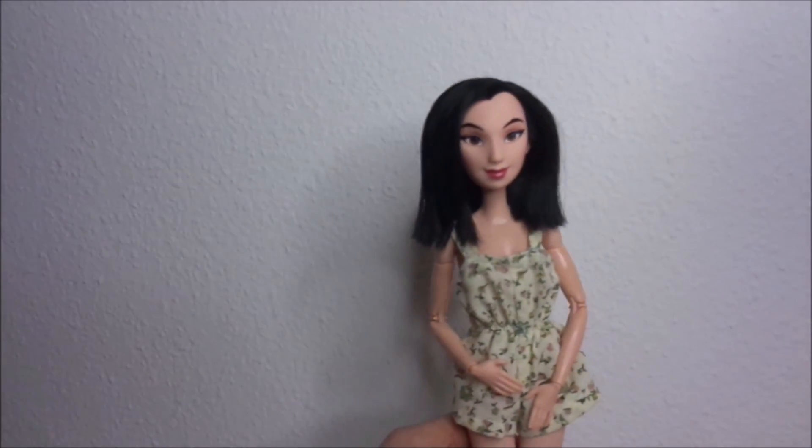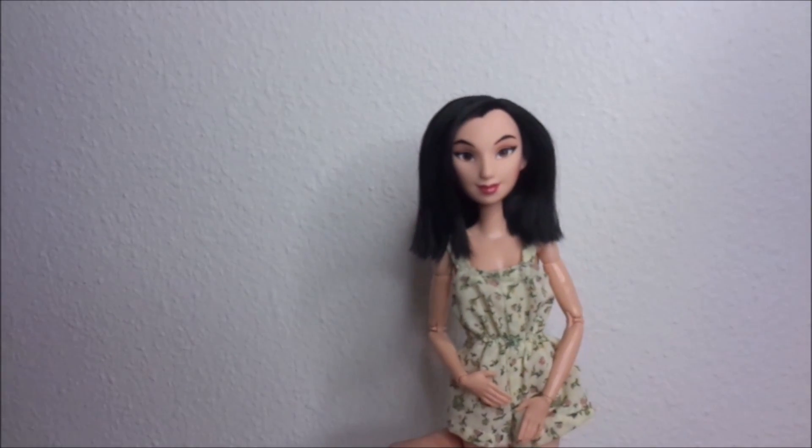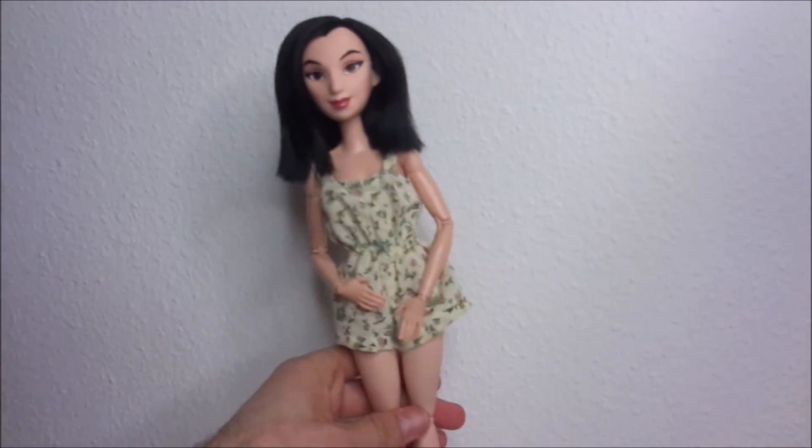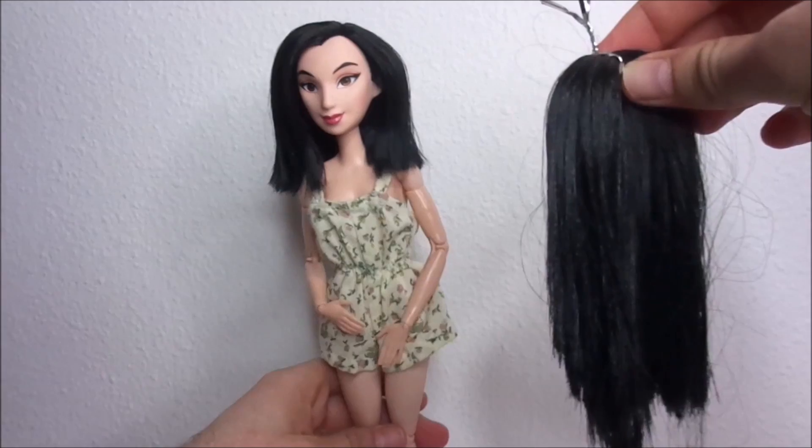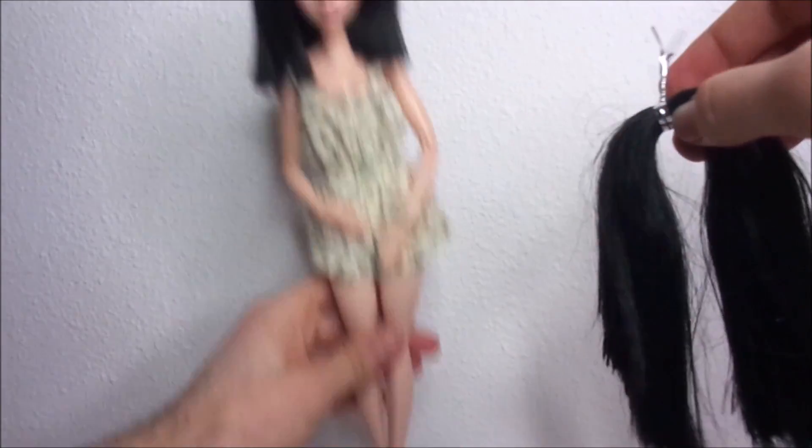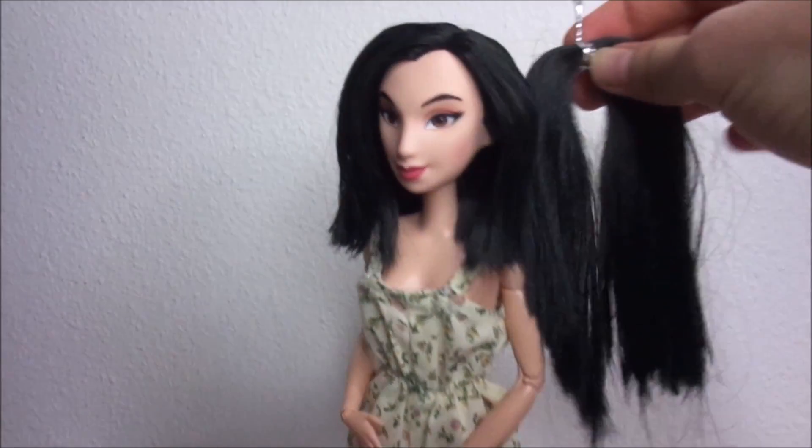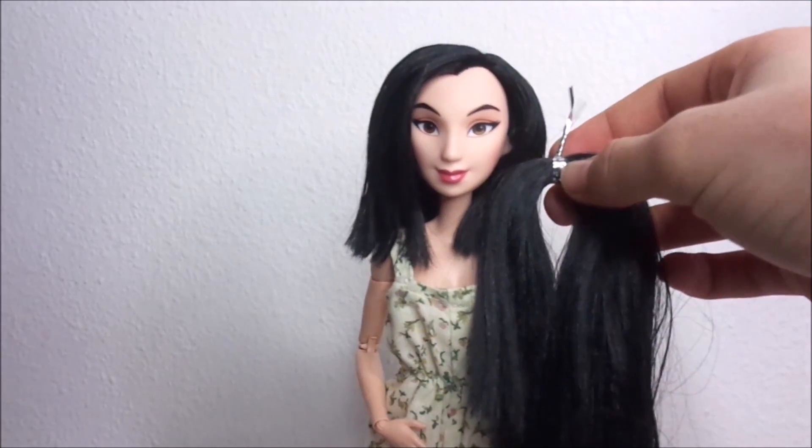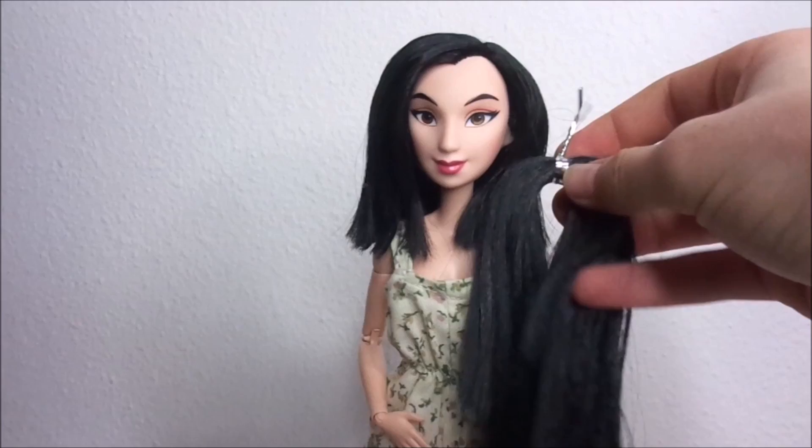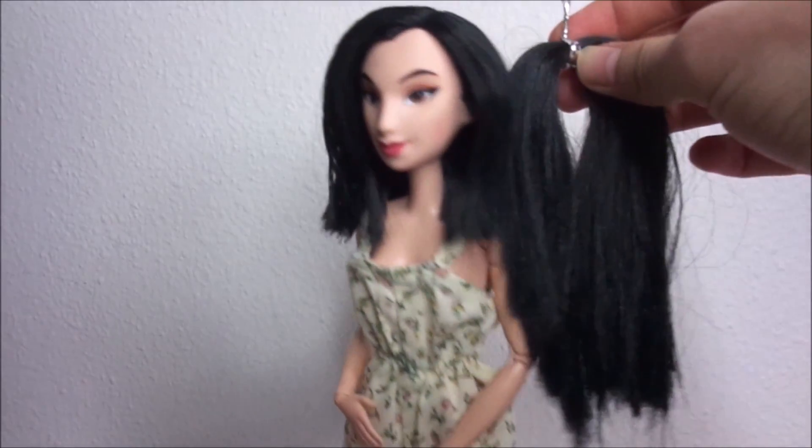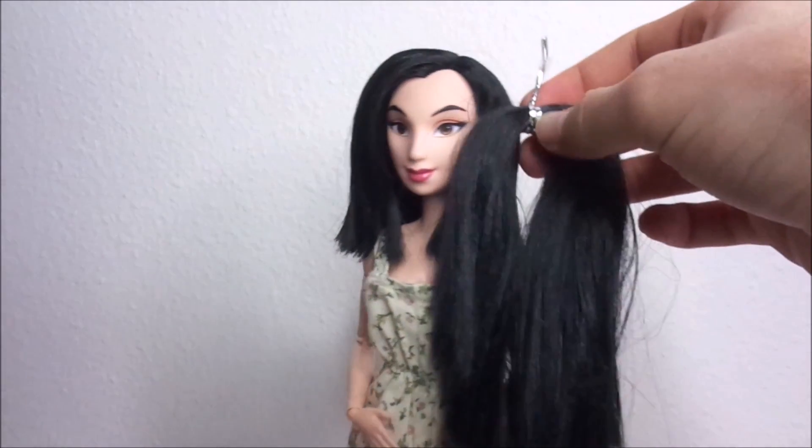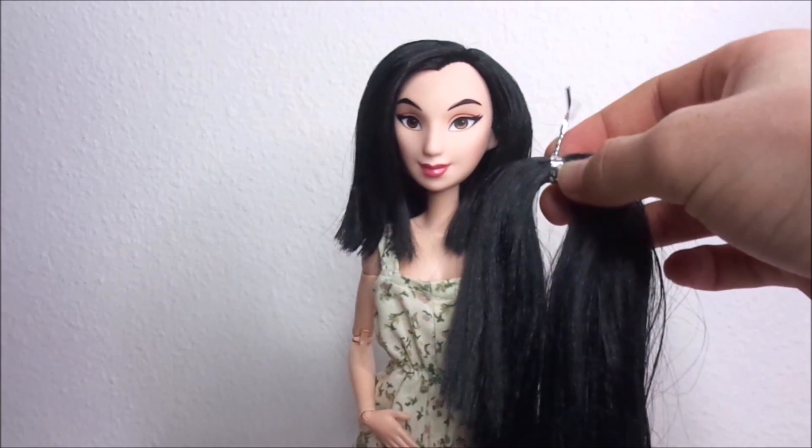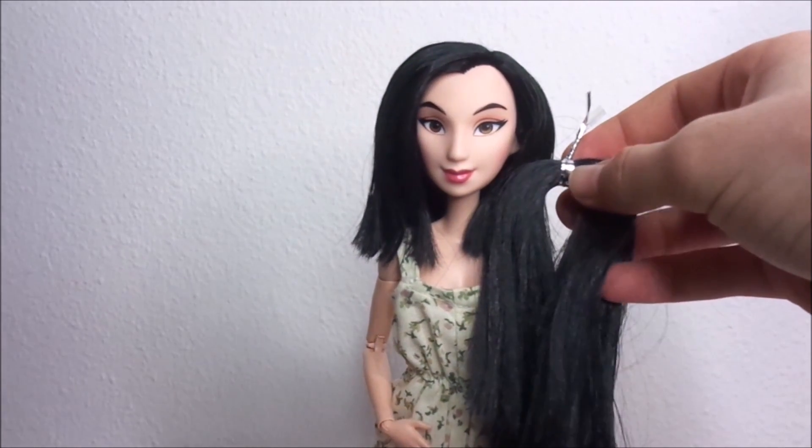In this video I will be making a set of extensions for my Mulan doll. Because I rerooted her in a previous video it was really easy for me to get hair that matched the doll's rooted hair perfectly. If you did not reroot the doll's hair, just try to match the hair type and color as well as possible. For this specific doll I'm using saran hair from dollyhair.com in the color Raven Black.